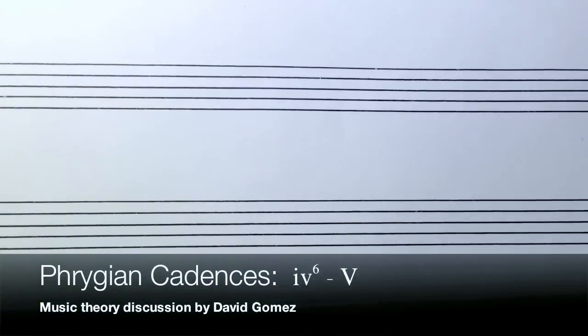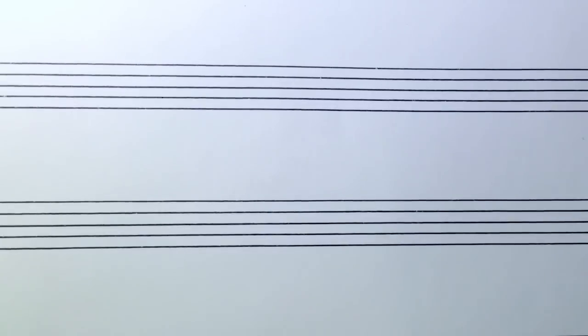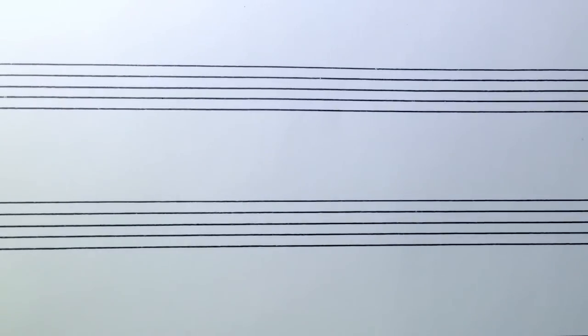Okay theory students, welcome to another discussion of music theory. This time we're going to talk about Phrygian cadences. Phrygian cadences are cadences that use a IV chord in first inversion and they head into a V chord. They're used a lot in the Baroque period and they only happen in minor keys.